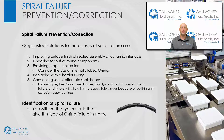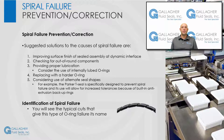How do you prevent or correct spiral failure? Suggested solutions include improving the surface finish of the sealed assembly at the dynamic interface such as the cylinder bore or piston rod, checking for out-of-round components especially cylinder bores, providing proper lubrication and possibly considering internally lubed O-rings, replacing the current O-ring with a harder material, and considering alternate seal shapes. For example, a T-seal is specifically designed to prevent spiral failure and allows for increased tolerances because of built-in anti-extrusion backup rings.